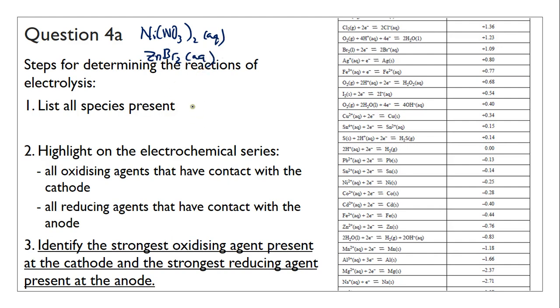The species present are nickel ion, zinc ion, nitrate ions, which is a spectator ion so we're not going to have to worry about, bromide ion, water, and because your electrodes are reactive, made of copper and not inert, you also have to take them into account. So copper is going to be one of the species present.